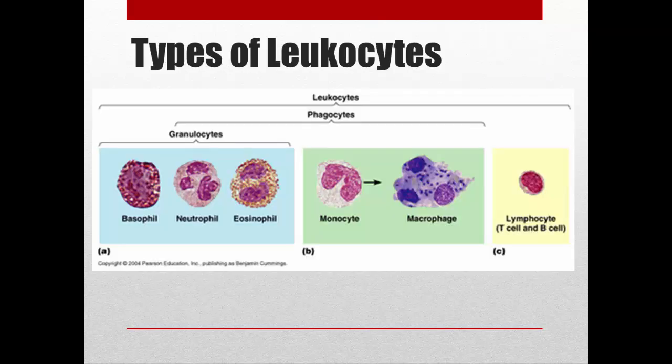There are different kinds of white blood cells classified into two general categories: granulocytes and agranulocytes. The granulocytes consist of basophils, neutrophils, and eosinophils. The monocytes and lymphocytes are called agranulocytes. Some of the white blood cells are phagocytotic; others, like lymphocytes, are not. We'll see which ones are best at phagocytosis in a little bit.